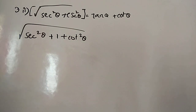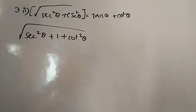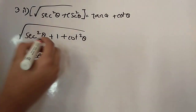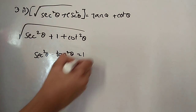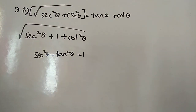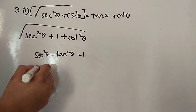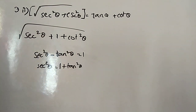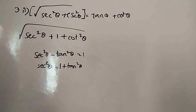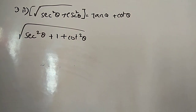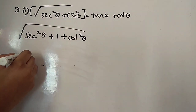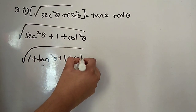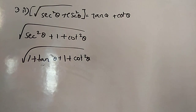Similarly, for secant and tan, we have the identity: secant squared theta minus tan squared theta equals 1. So secant squared theta equals 1 plus tan squared theta. Substituting both identities, we get 1 plus tan squared theta plus 1 plus cot squared theta inside the square root.